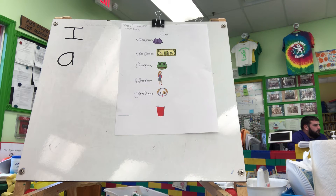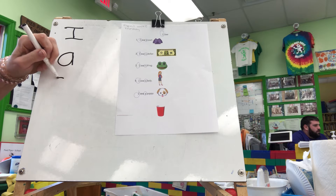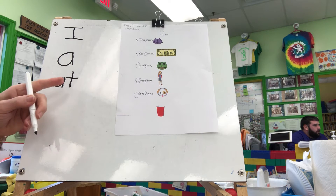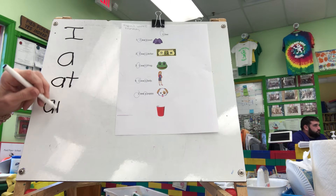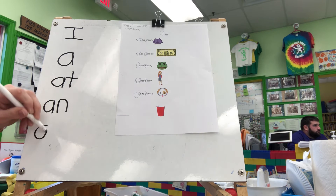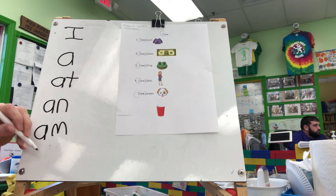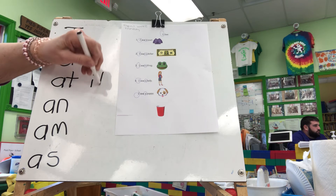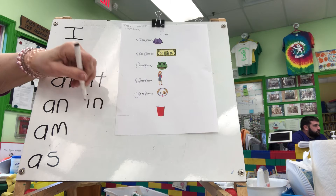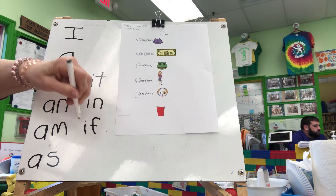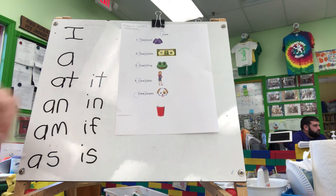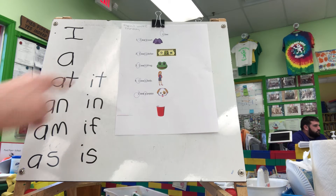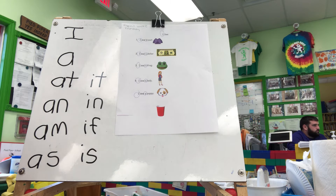Does anyone see any two-letter words? Remember, we can take the A and add another consonant and get a new word like at, an, am, or as. We took that A and added another letter. We can take the I and do the same thing: it, in, if, is — with that S sounding like a Z. Do you see any two-letter words in our text? No? Me neither. So we will go to three-letter words.